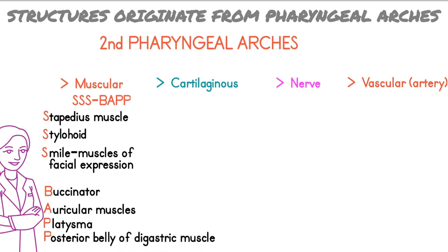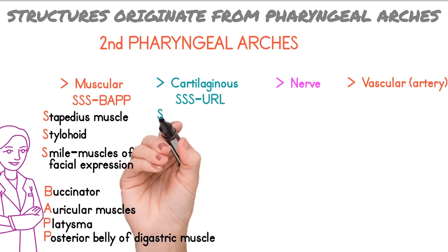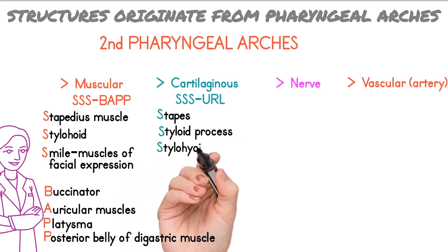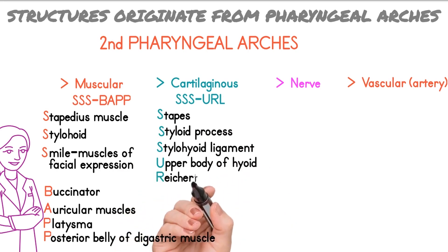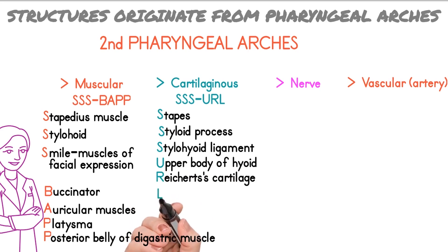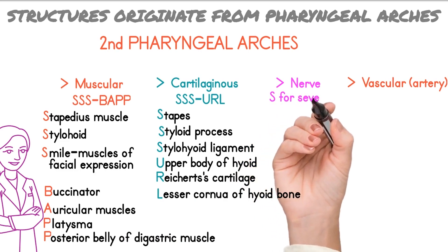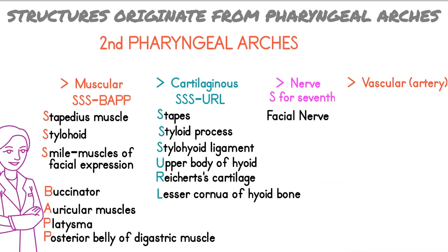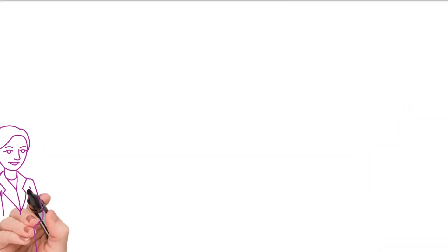The cartilaginous component of the second arch has the mnemonic 'triple S-U-R-L.' From S, the stapes bone is formed. Next is the styloid process and stylohyoid ligament. From U, there is the upper body of hyoid bone. R stands for Reichert's cartilage, and L stands for the lesser cornu of the hyoid bone. Nerve supply of the second pharyngeal arch is through the seventh cranial nerve, the facial nerve. Arterial supply is through the stapedial artery, which obliterates at birth.